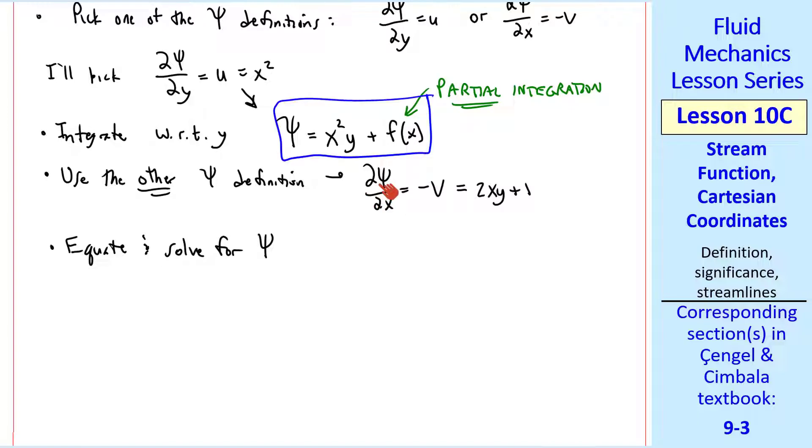So from here, we calculate del psi del x. So del psi del x is 2xy plus f prime of x. In other words, the derivative of f with respect to x. This part comes from the equation I outlined in blue.